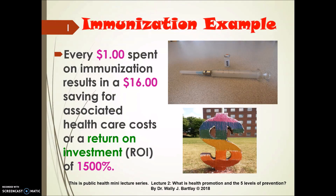Here we have an immunization example. Every dollar spent in Canada on immunization results in a $16 saving in associated healthcare costs, or a return on investment of 1,500%. An ounce of prevention, of course, is worth a pound of cure. Immunization against various vaccine-preventable communicable diseases, including smallpox, polio, tuberculosis, measles, mumps, and rubella, has been shown on a global scale to be an efficient and cost-effective public health intervention.